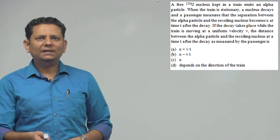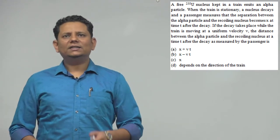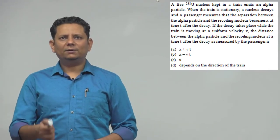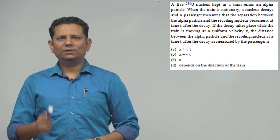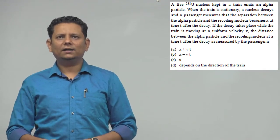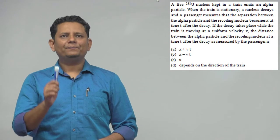Next question. A free uranium-238 nucleus kept in a train emits an alpha particle. If the train is stationary, a nucleus decays and a passenger measures that the separation between the alpha particle and the recoiling nucleus becomes X at time T after the decay.